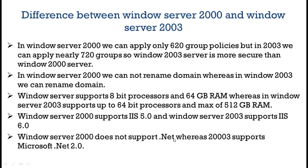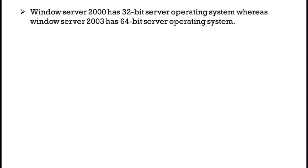Windows Server 2000 does not support .NET, whereas Windows Server 2003 supports Microsoft .NET 2.0. Also, Windows Server 2000 has a 32-bit server operating system, whereas Windows Server 2003 has a 64-bit server operating system.